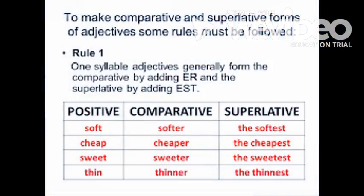To make comparative and superlative forms of adjectives, some rules must be followed. Rule one: one-syllable adjectives generally form the comparative by adding '-er' and the superlative by adding '-est'. For example: soft, softer, the softest; cheap, cheaper; sweet, sweeter, the sweetest.